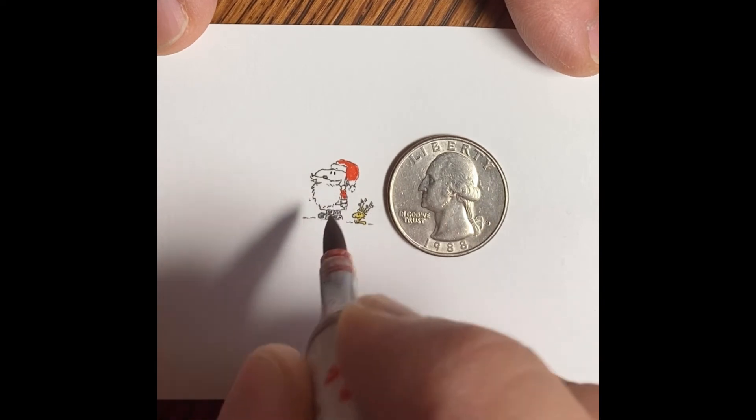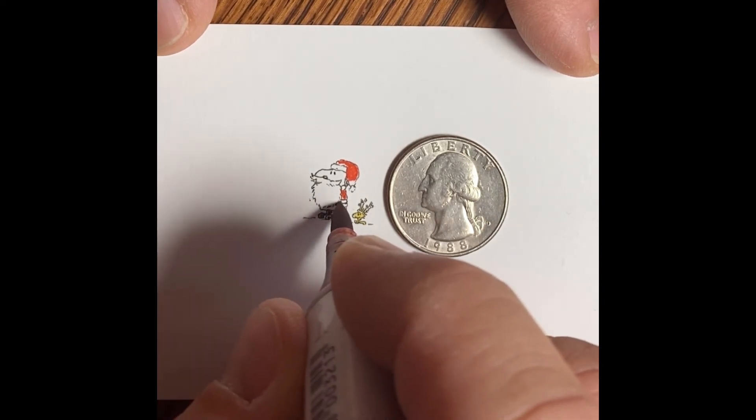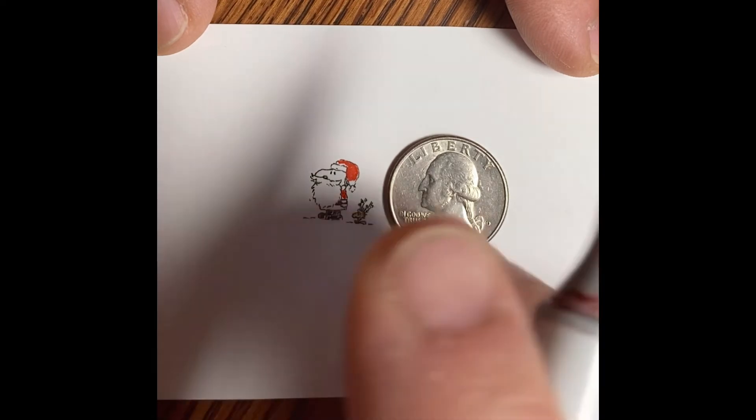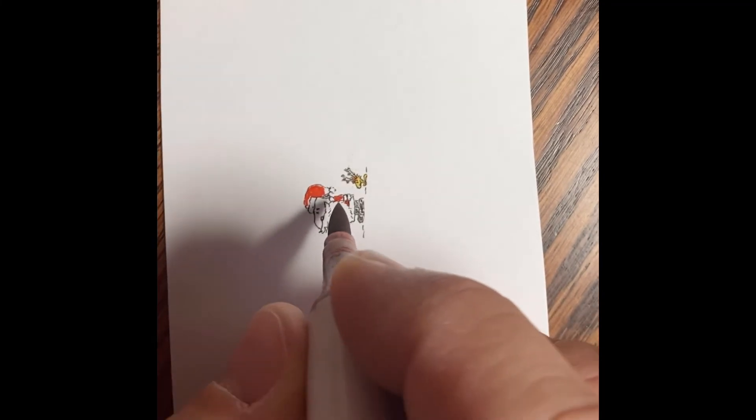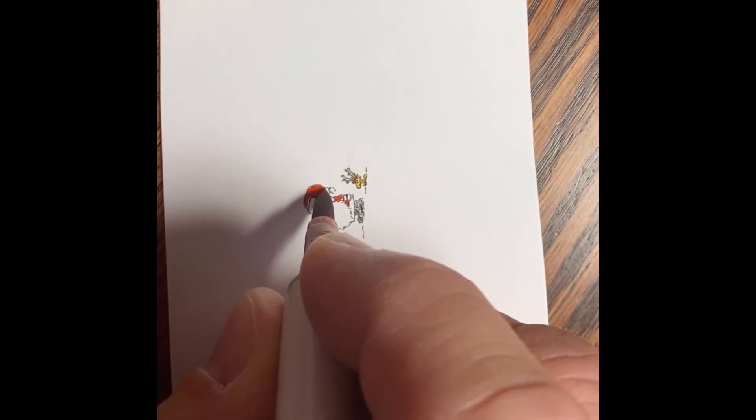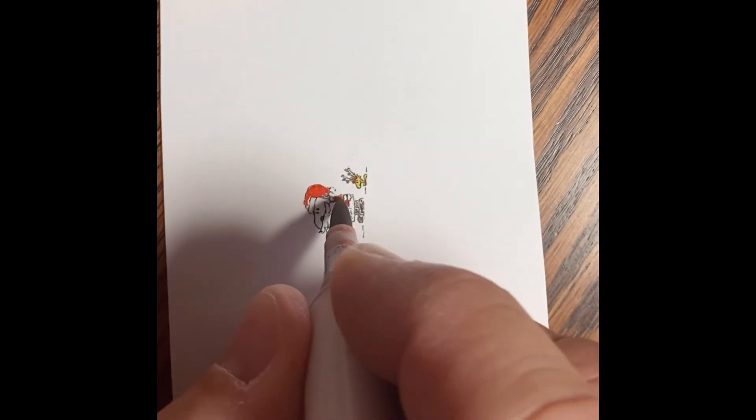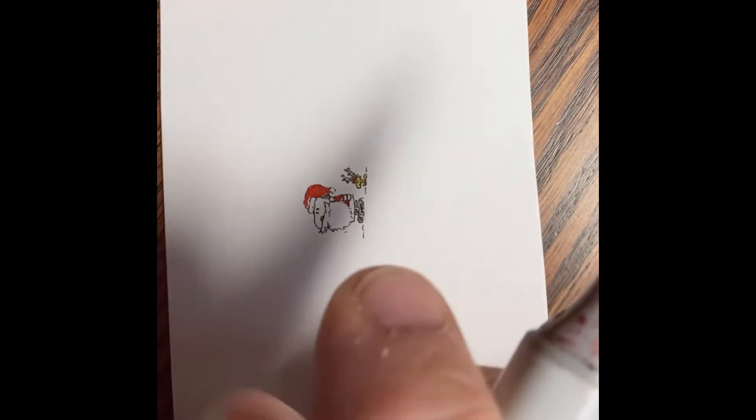You'll see here especially on the headband for Woodstock that I need to rotate it so I can draw the marker towards me a little bit because it's such a thin area. Now I'm working around and touching up to the black line on the rest of the red on Snoopy's outfit.